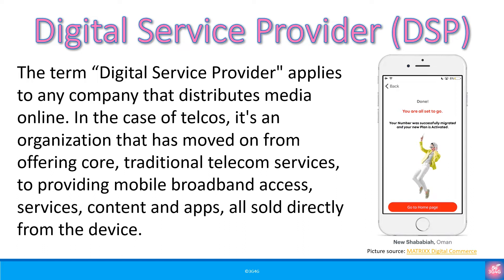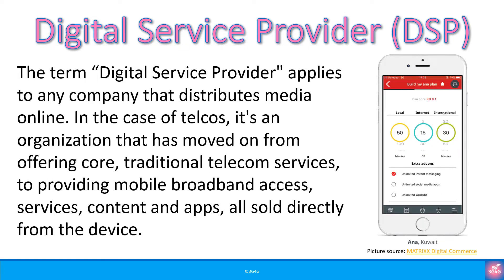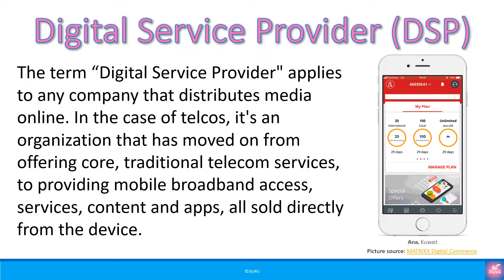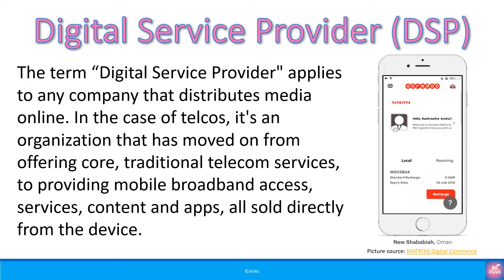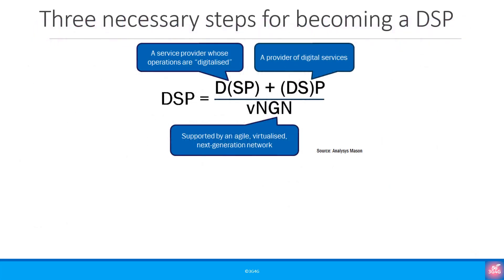The image shows Oridu launching new Shababia in Oman and Anna in Kuwait to provide an experience to their customers that could evolve the group brand into a digital service provider. We found an AnalysisMason report explaining in the best possible way how a CSP can transform into a DSP. The link is available at the end and, as always, slides can be downloaded from our SlideShare channel.